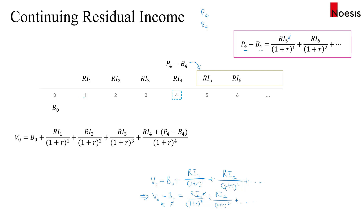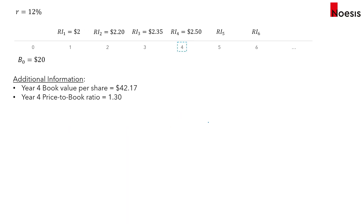The intrinsic value is calculated by taking book value plus the PV of residual incomes for years one, two, and three, and in year four adding the residual income plus the premium over book value — (P4 − B4).